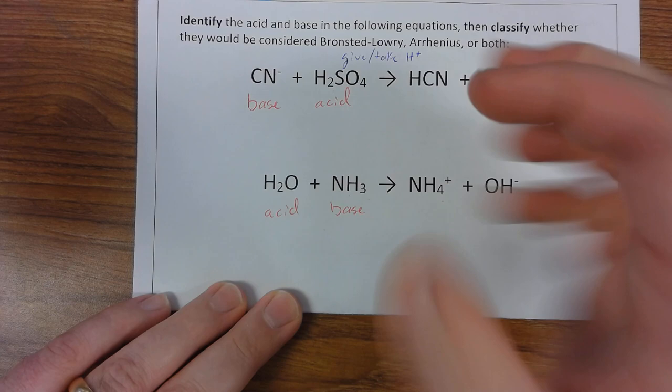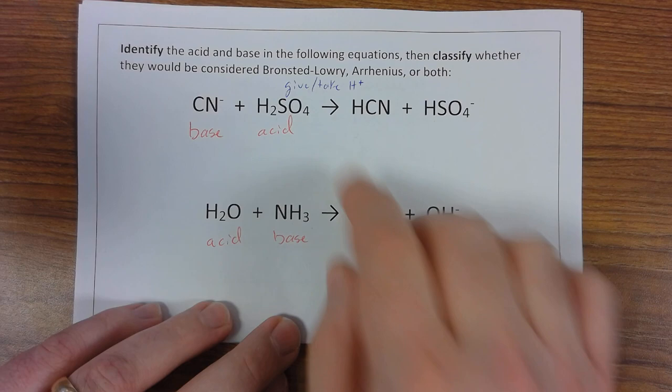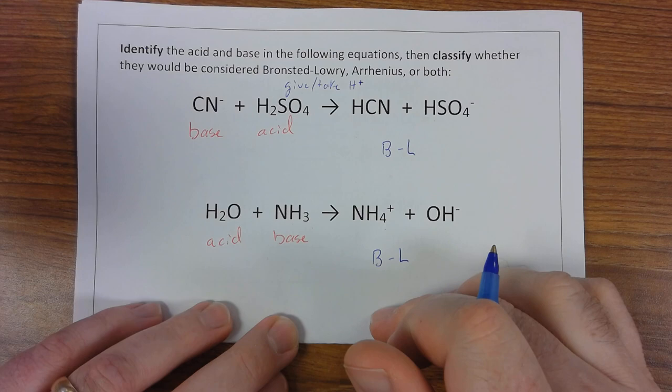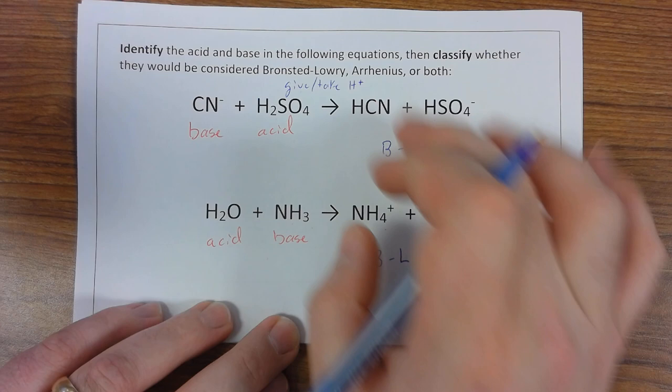Now, both of these, because we talked about the give and the take of hydrogens, the acids and bases here are both going to be considered Bronsted-Lowry. So I'm going to make a little notation here. I'm just going to write B-L, B-L, and that's short for Bronsted-Lowry. So these would be considered acids and bases under Bronsted-Lowry's definition.